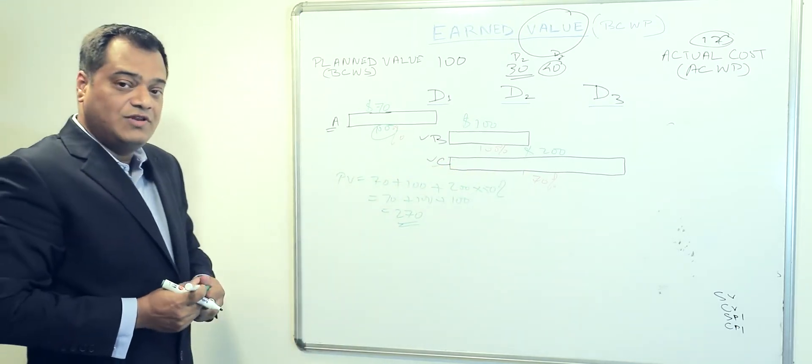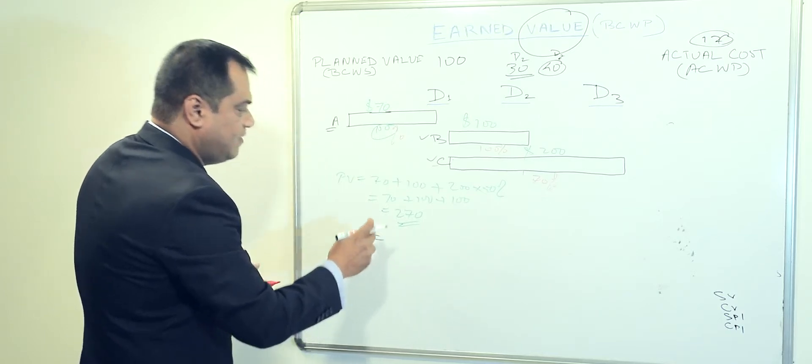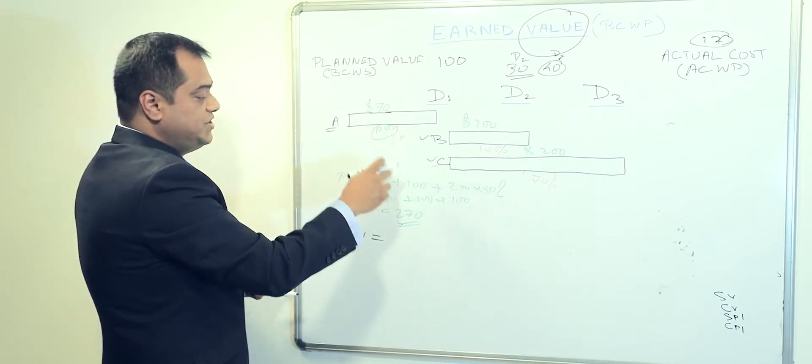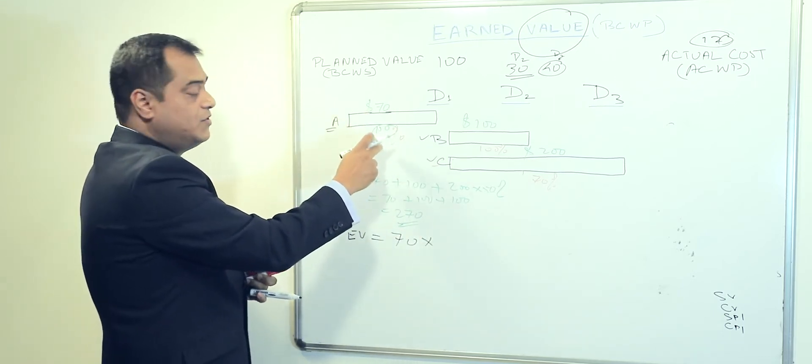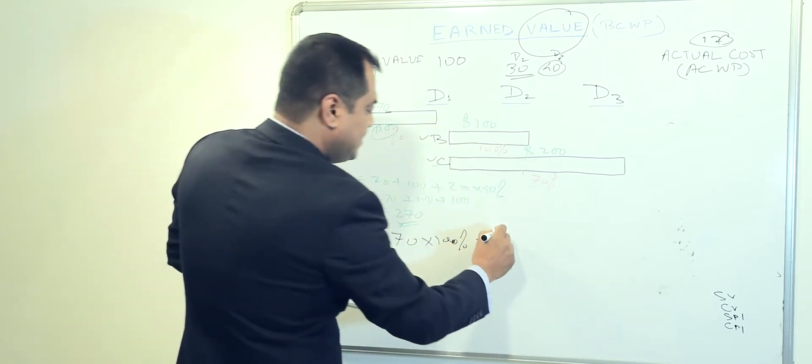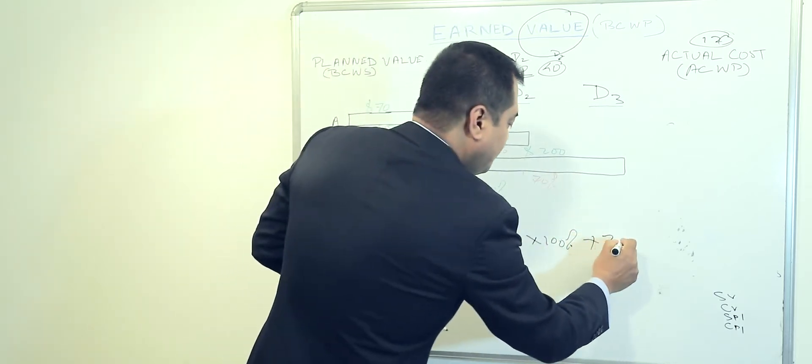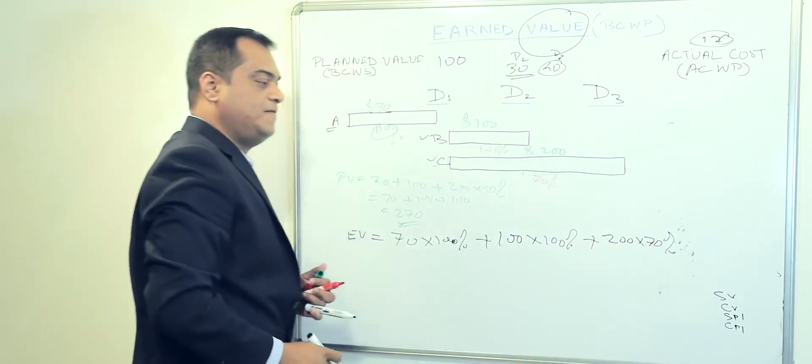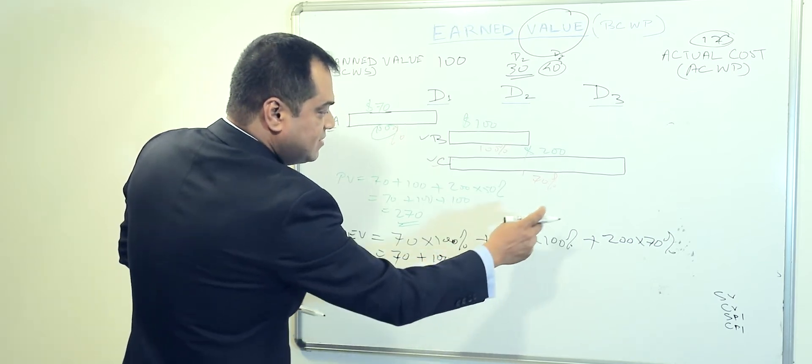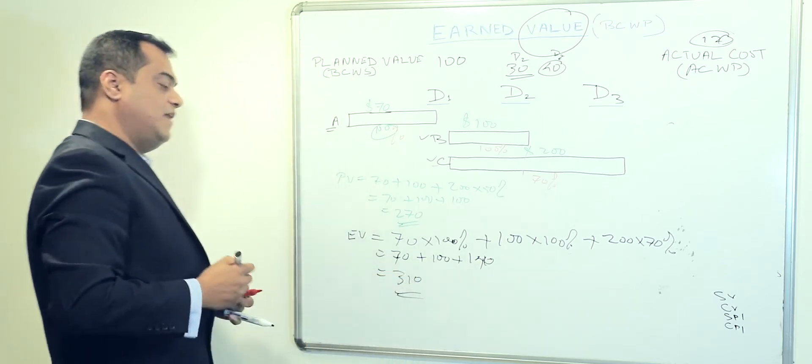So now let's measure earned value. It's quite simple. Like I said, if you have done exactly as per the plan, it's always going to be equal to plan. We just need to multiply the cost with the percentage progress. So now this is 100 percent, plus this also is completed 100 percent, plus now 200 is now 70 percent. As you can see, we end up with 70 plus 100 plus 140. That makes our earned value 310.